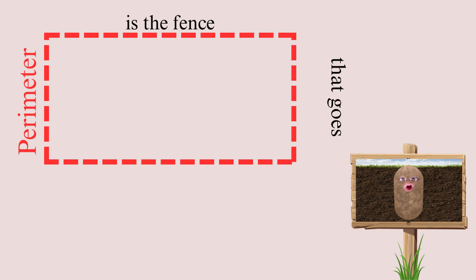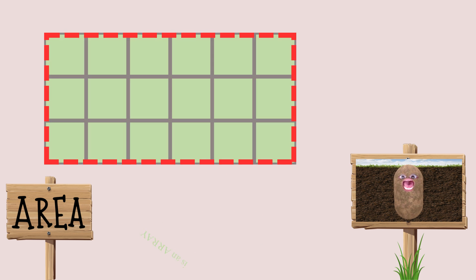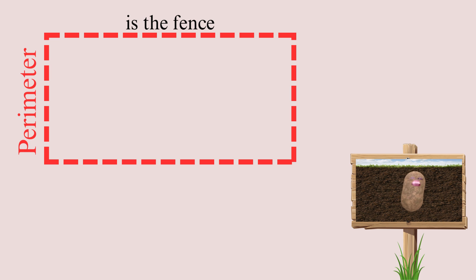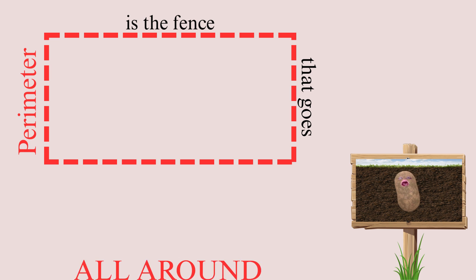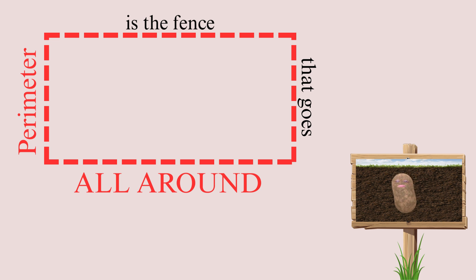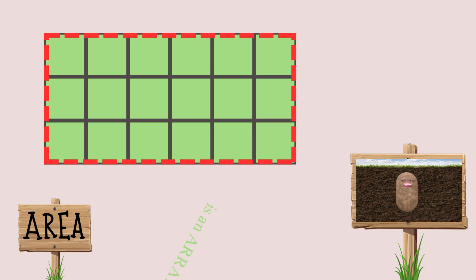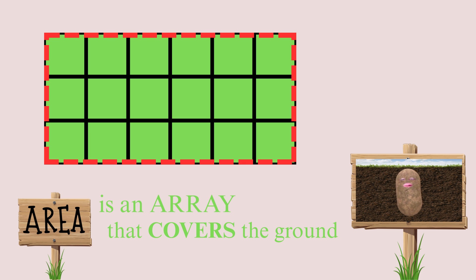Perimeter is a fence that goes all around. Area is an array that covers the ground. Perimeter is a fence that goes all around. Area is an array that covers the ground.